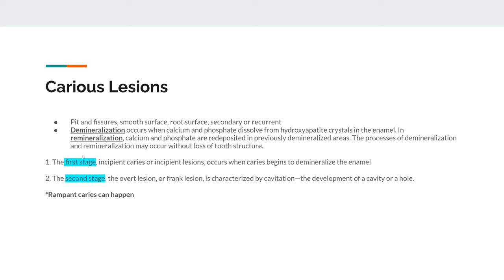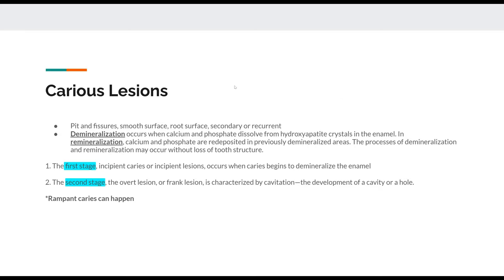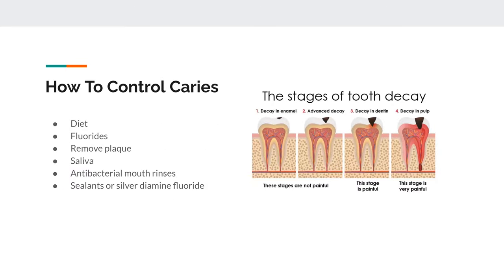There are different stages of caries. The first stage is incipient caries — that can get better, worse, or stay the same, and you don't necessarily need a filling unless it gets worse. The second stage is where you need a filling. Rampant caries can also happen, meaning cavities can spread easily — you have to talk to that patient about doing everything to really limit cavities.